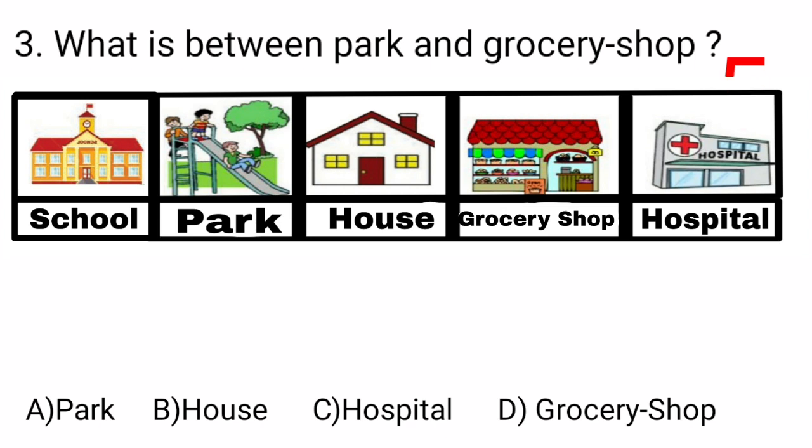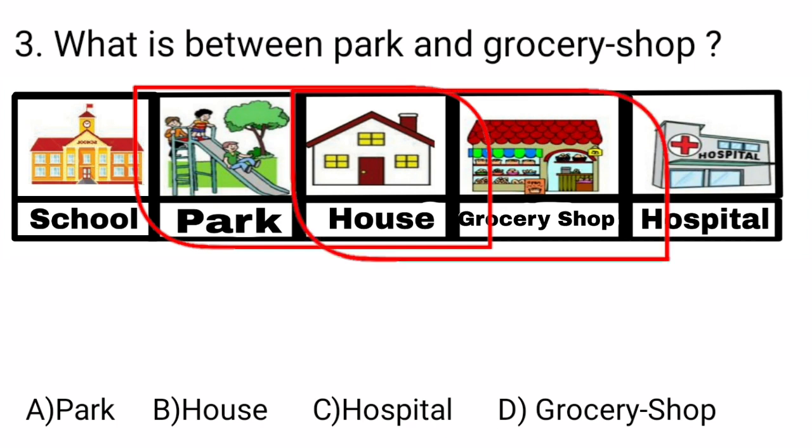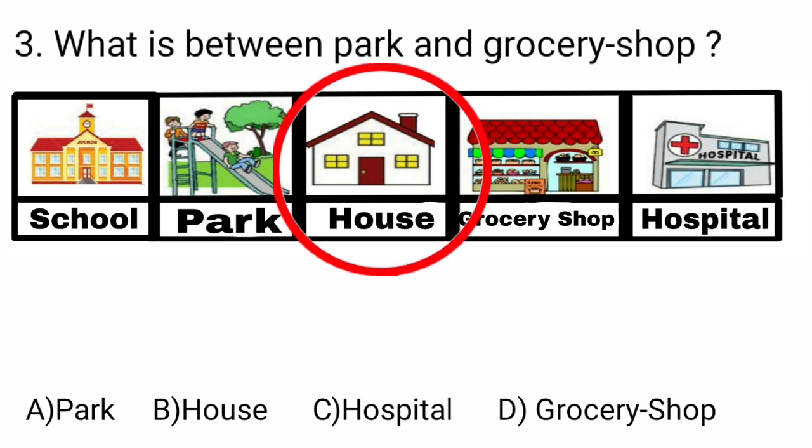We can see that after park, house is there. And after house, grocery shop is there. Which means the house is in between park and grocery shop. So students, option B, house, is our correct answer. So let's take option B.